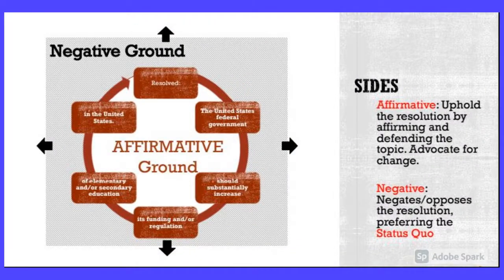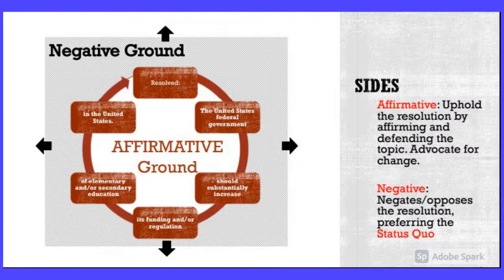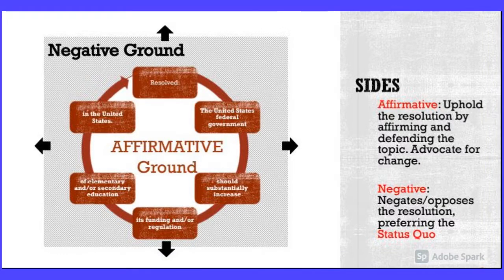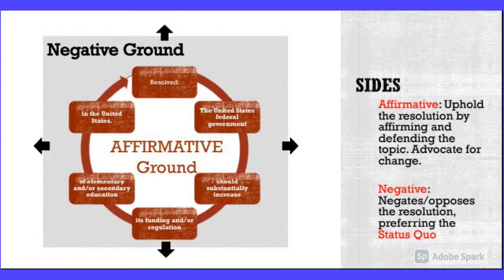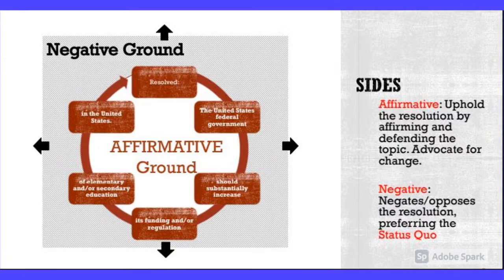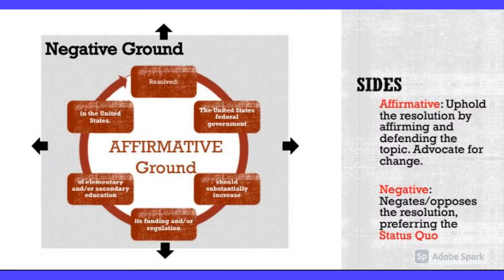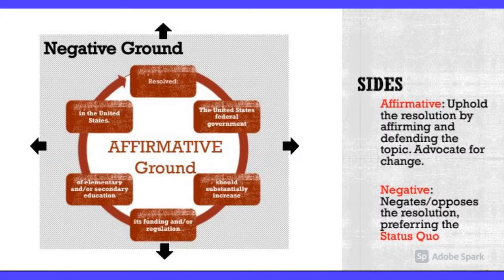Here's an example of what you're doing as the affirmative or the negative. I have this wheel here that tells you how you process the statement — this is with an old topic, so just pretend it's our current topic. As the affirmative you're breaking down each section of that resolved statement and finding evidence to back up each part. You'll be finding things like how they'll reform by doing a specific thing, and how they'll fund it from a unit of the government. The affirmative's job is to advocate for change no matter what that is.